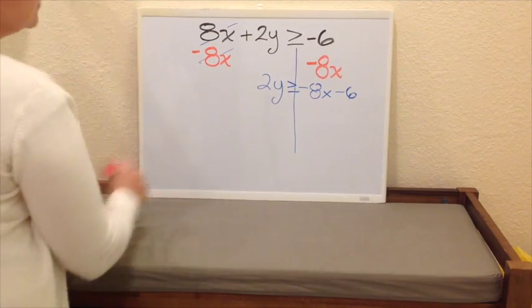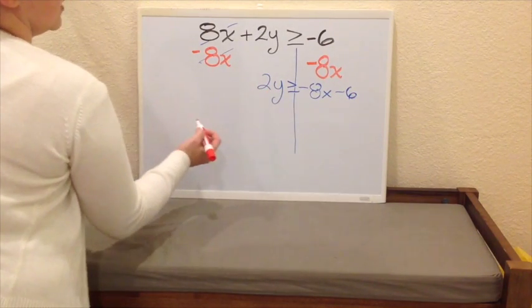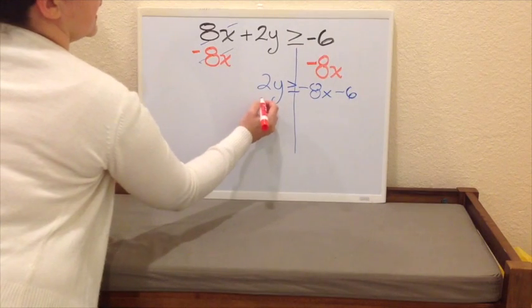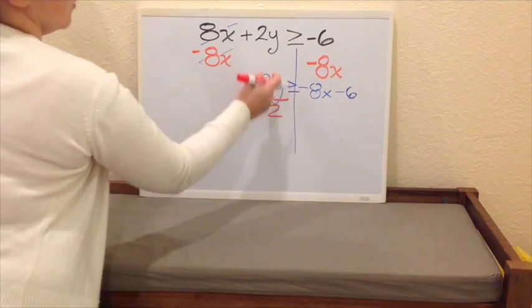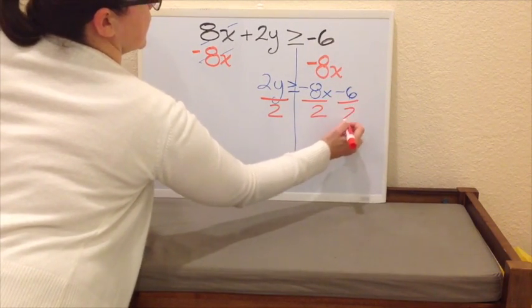Now, we need to cancel our number 2. Don't forget that this 2 is multiplying the y. Therefore, for me to cancel it, I need to divide by 2. Once I divide by 2, I need to do exactly the same for every single term on the other side.